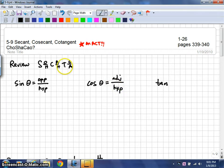And the TOA portion of SOHCAHTOA refers to the tangent of an angle being equal to the opposite leg divided by the adjacent leg.